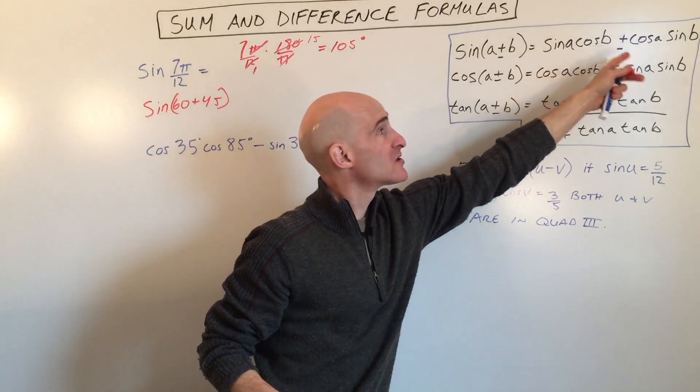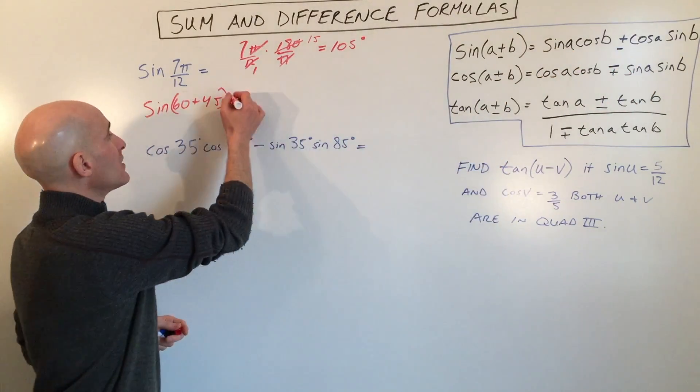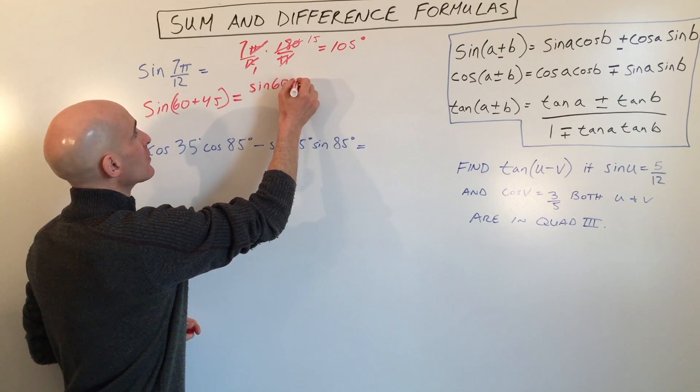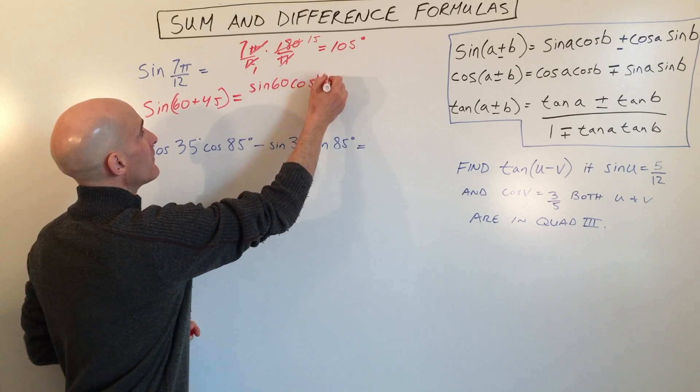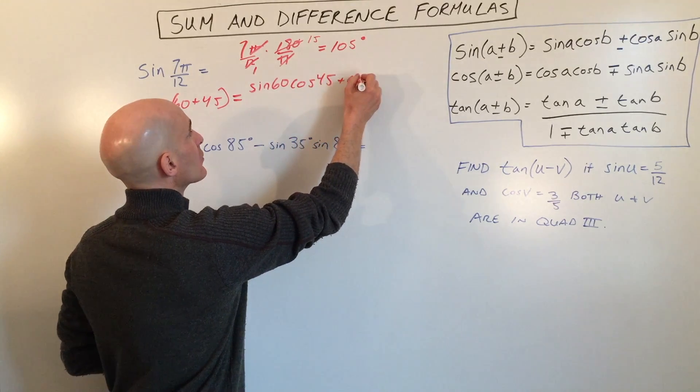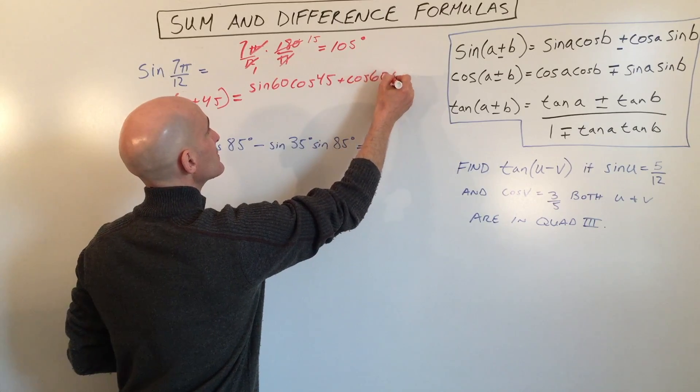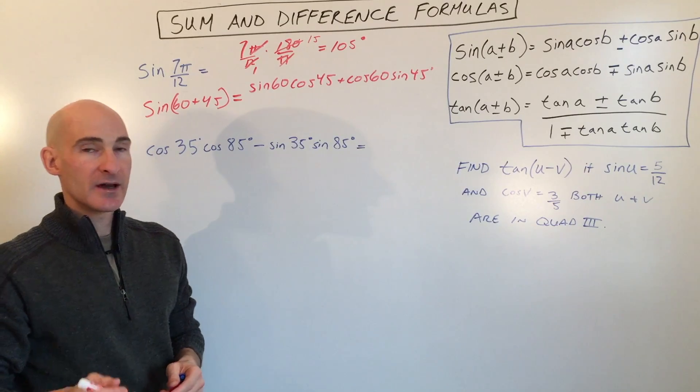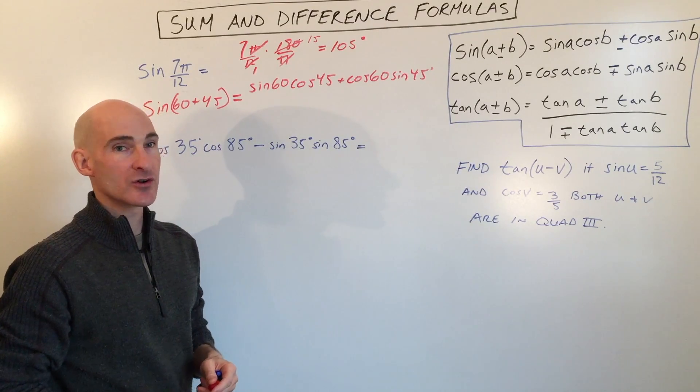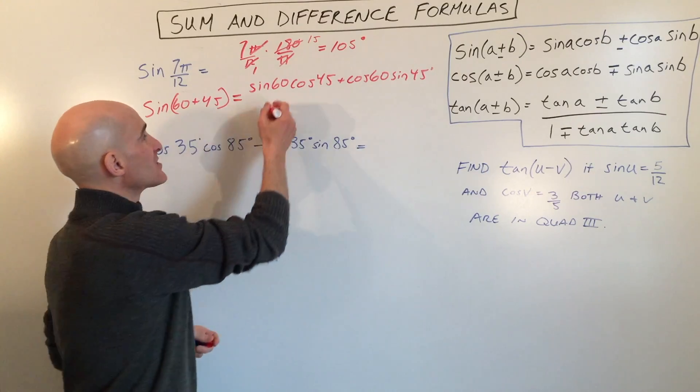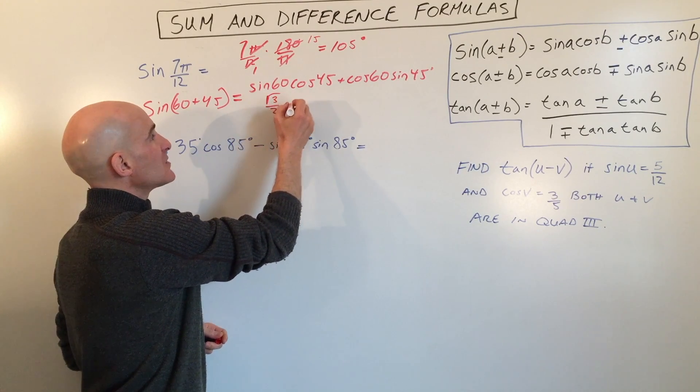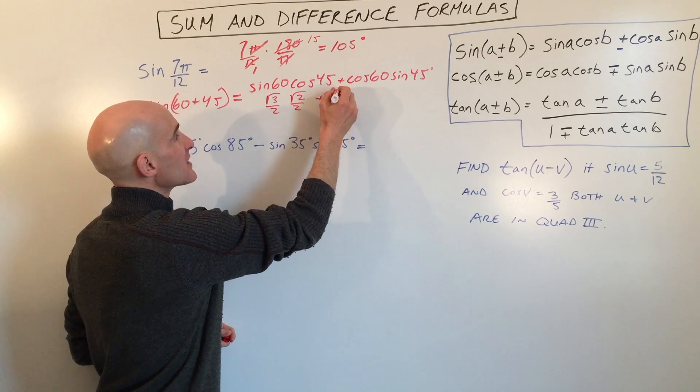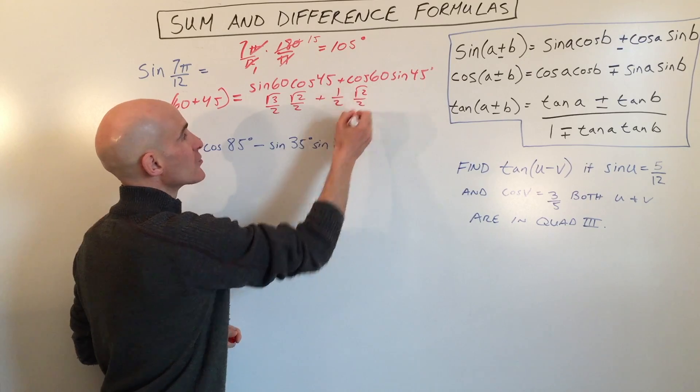And I'm going to substitute those in for A and B on the right side of the equation. So this equals sine of 60 cosine 45 plus cosine 60 times the sine of 45. Now you want to reference your unit circle. If you want to review that, you can go to my video on unit circle. But here, sine of 60 equals square root 3 divided by 2. Cosine of 45 is square root 2 over 2. Cosine of 60 is 1 half. And sine of 45 is square root 2 over 2.